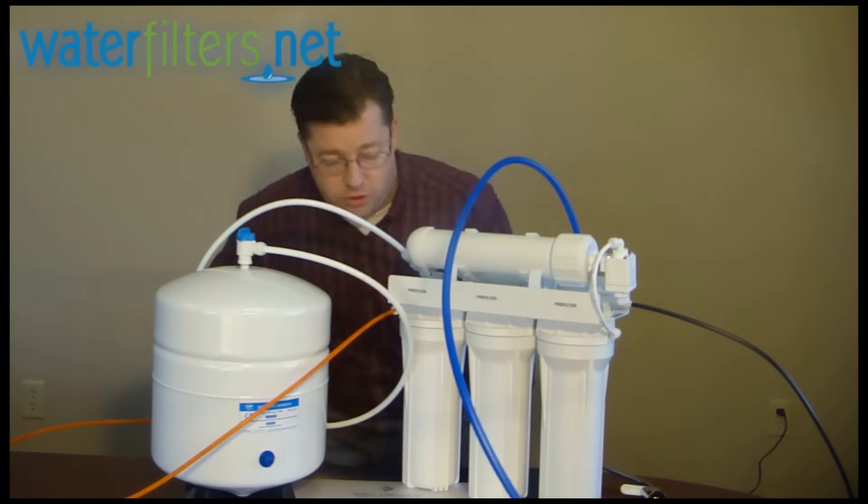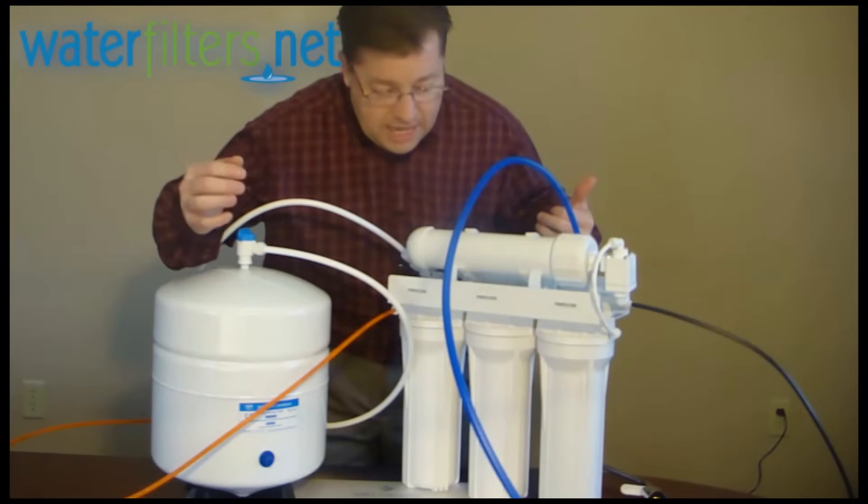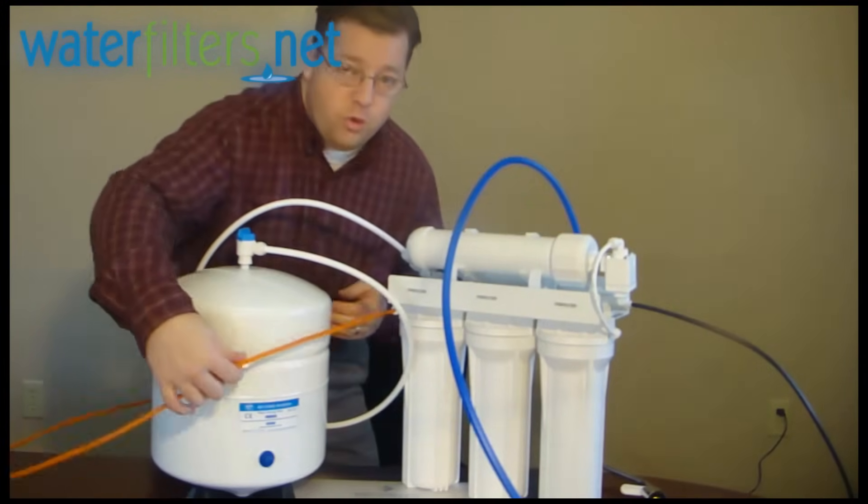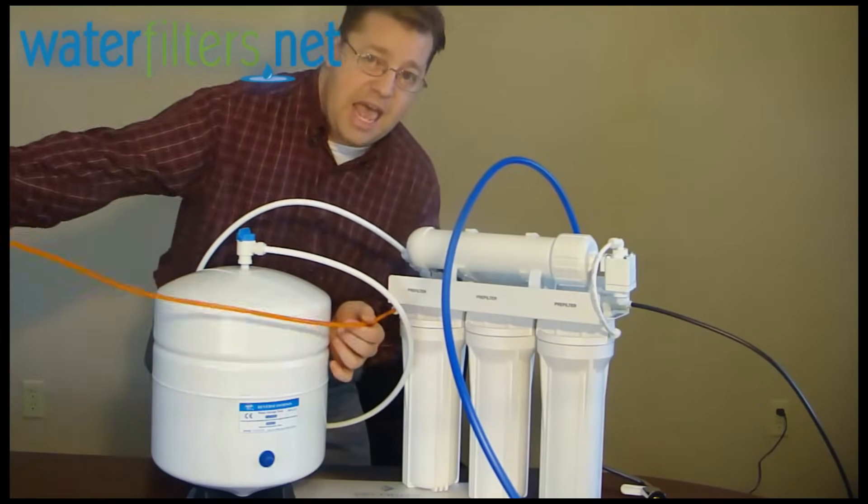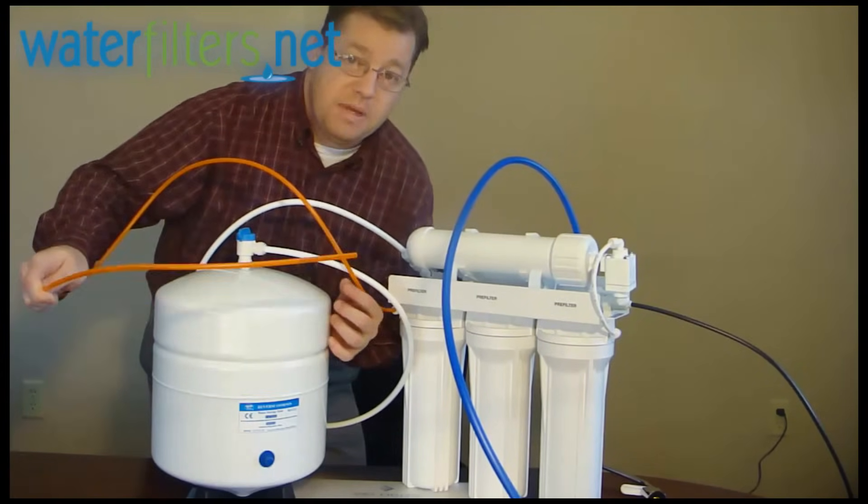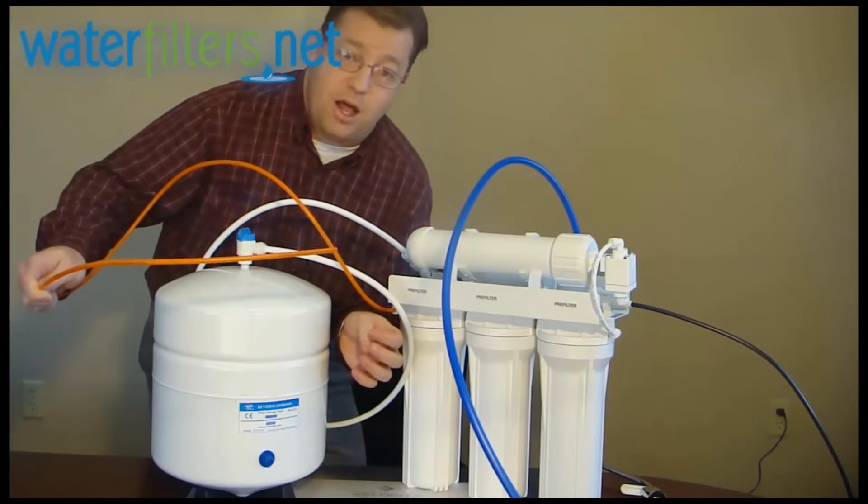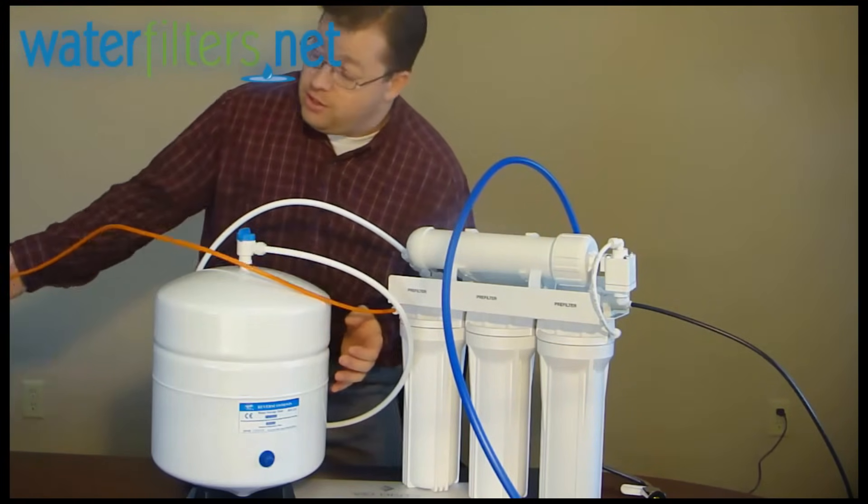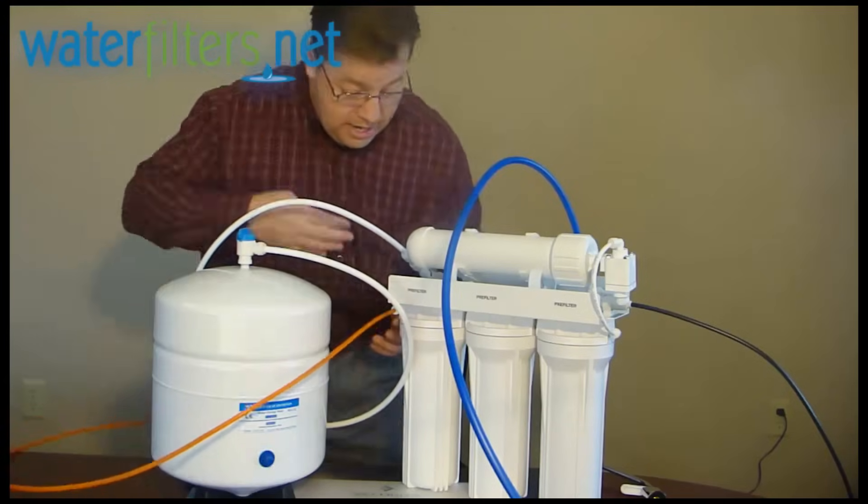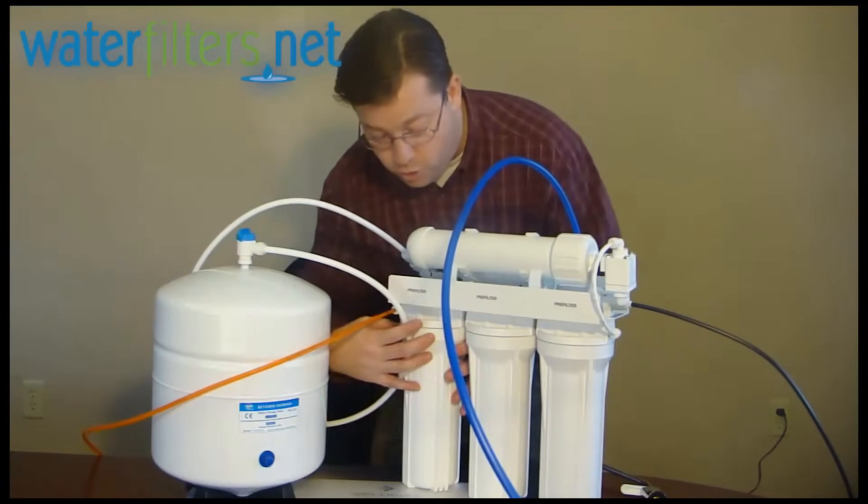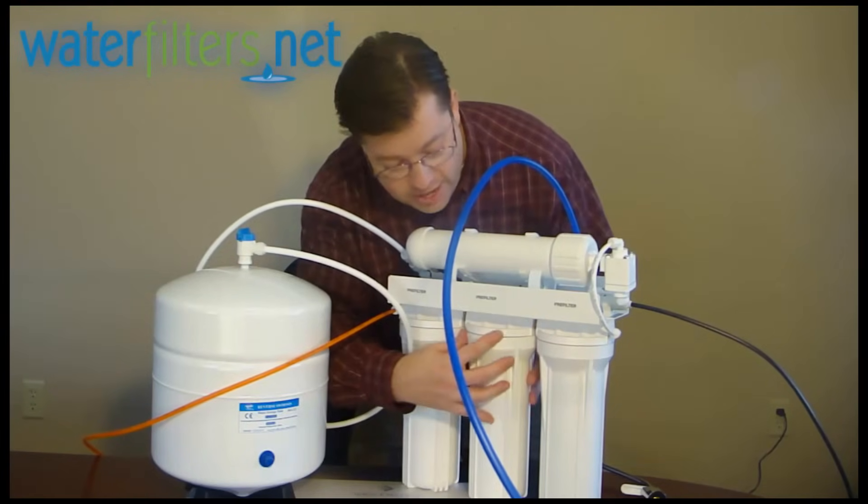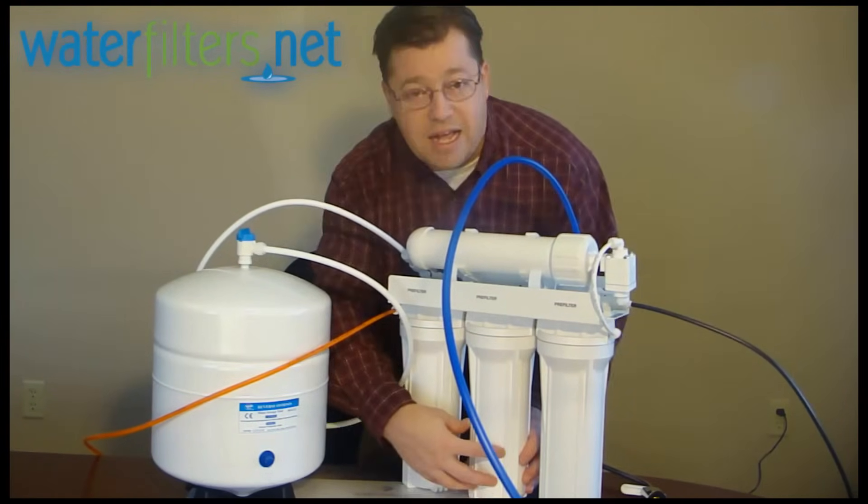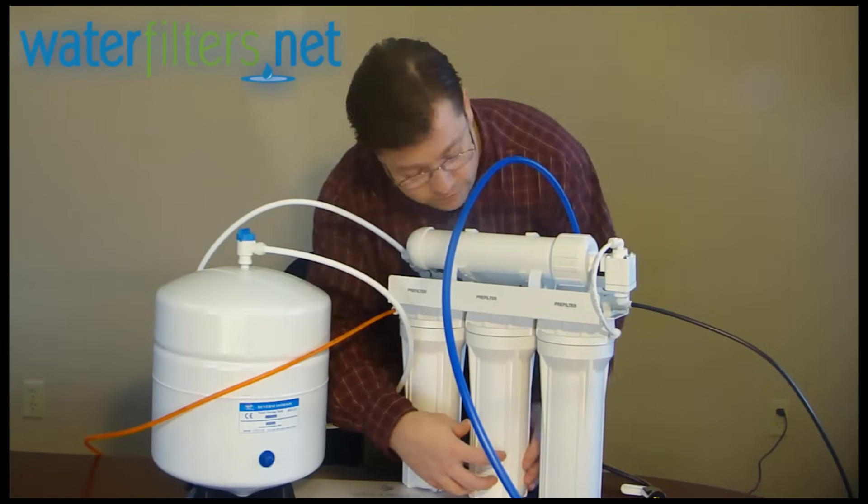Let me show you how this works. Water comes in to your system through the cold water supply in this orange water line. Now, the end of this water line would be connected to a valve at the cold water line. So the cold water comes in to here, goes through the first pre-filter, that's usually a sediment filter. Then the second filter, that's usually some form of a carbon filter.